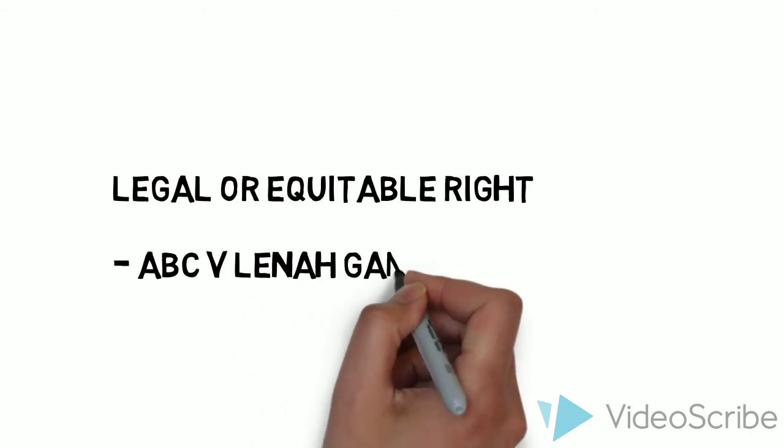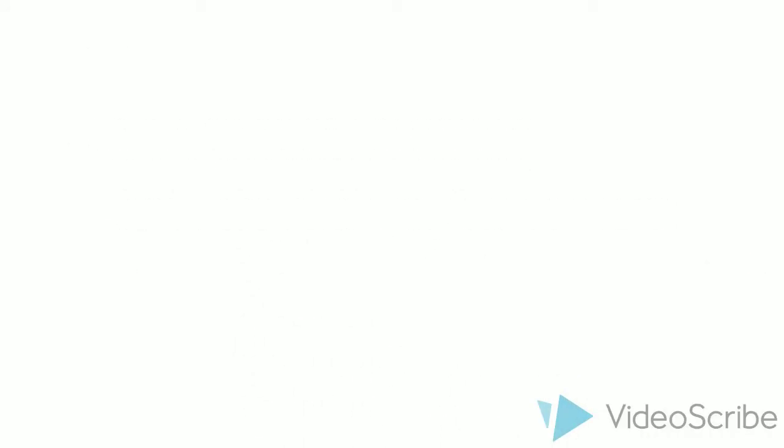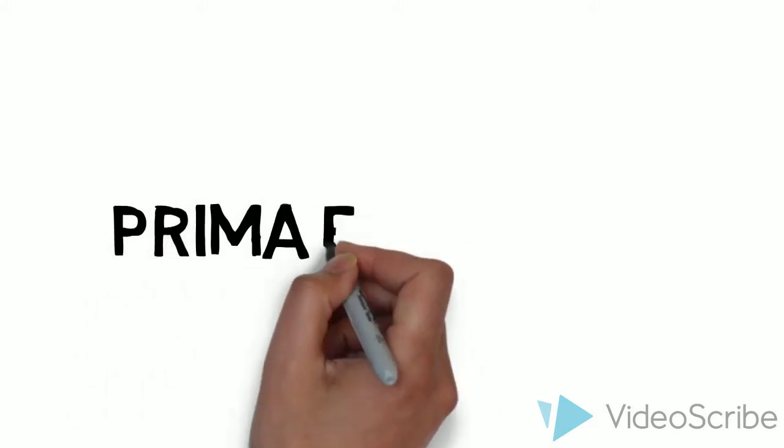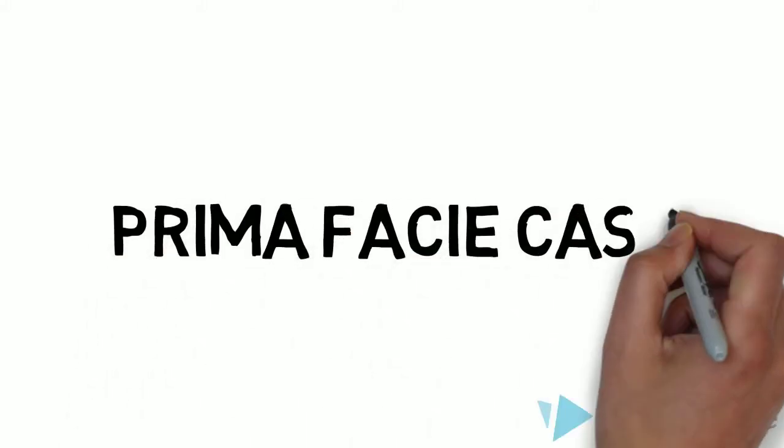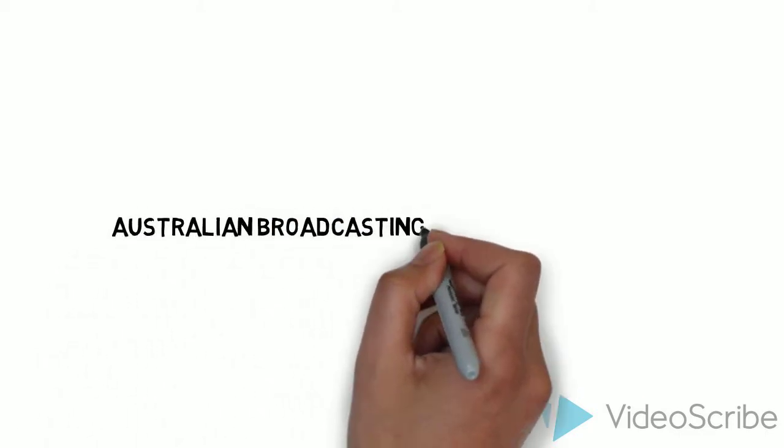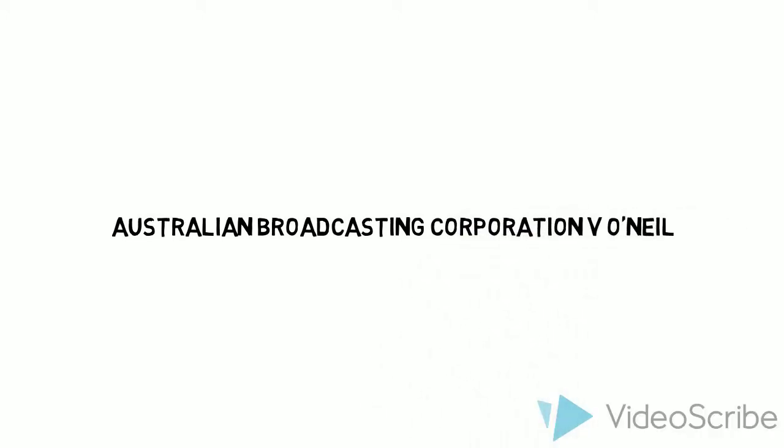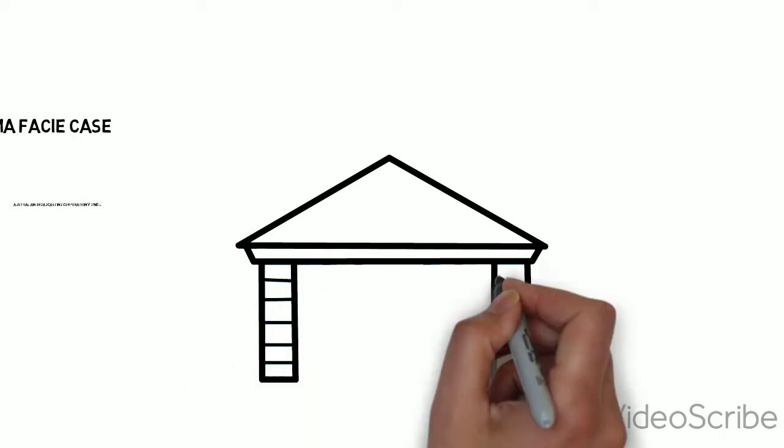What is required under the first element of this test has long been subject to much judicial to-ing and fro-ing. However, it was finally settled in the case of Australian Broadcasting Corporation and O'Neill, where the High Court held that the applicant must show that they have a prima facie case, and that it was no different to the previous test of being a serious question.